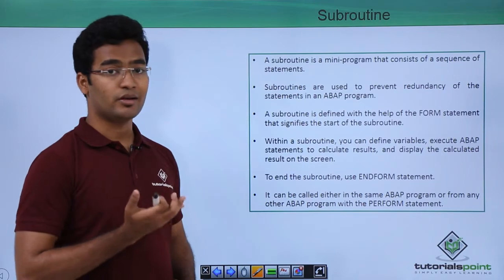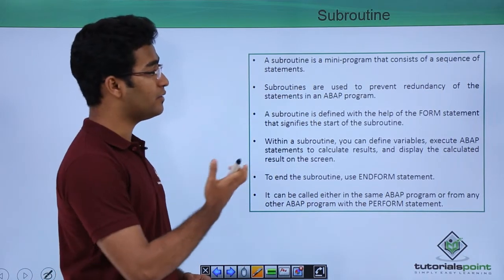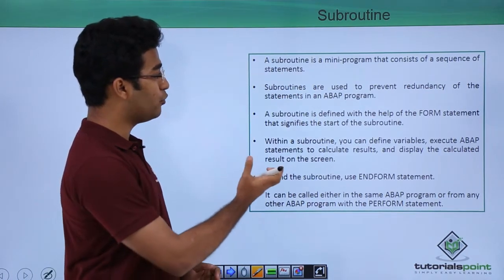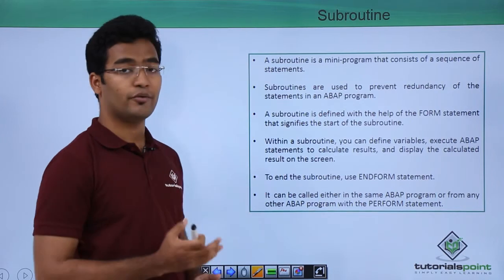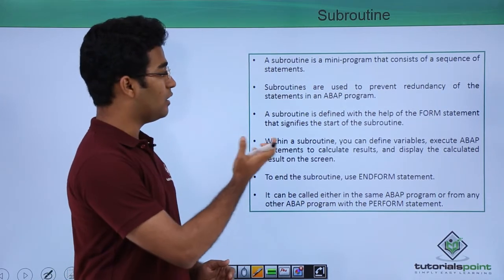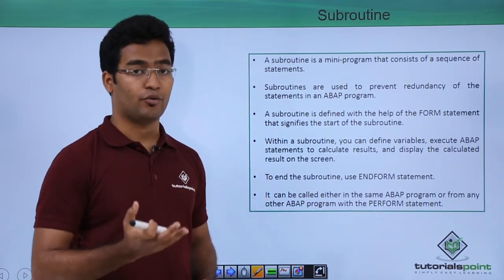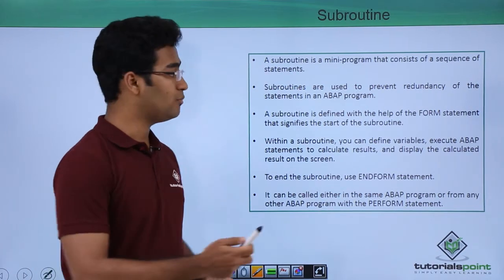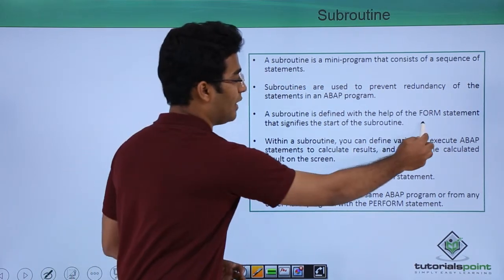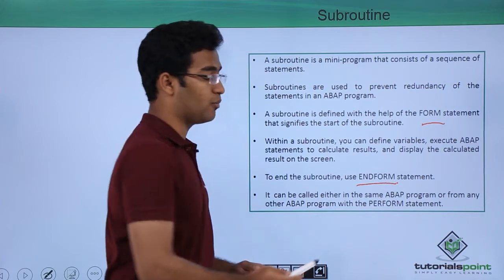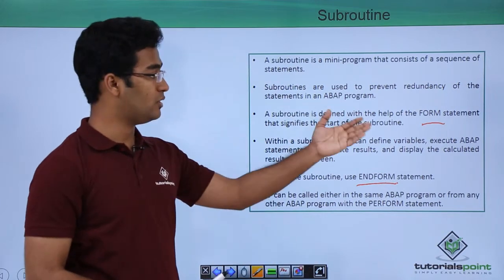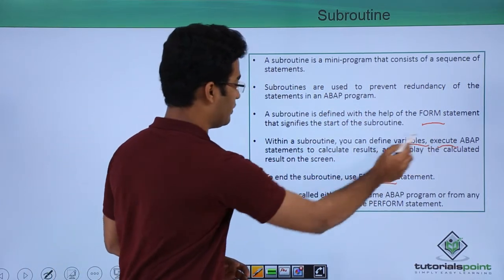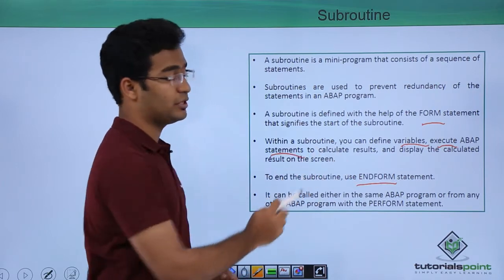Subroutines are nothing but a mini program that consists of a sequence of statements. Subroutines are used to prevent redundancy in the statements of an ABAP program. A subroutine is started with the FORM statement and can be ended with ENDFORM. Within FORM and ENDFORM we can define our variables and execute our ABAP statements.